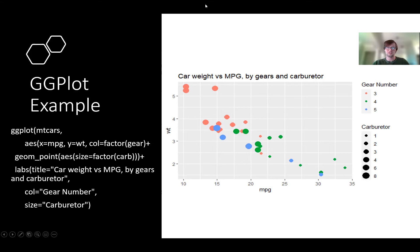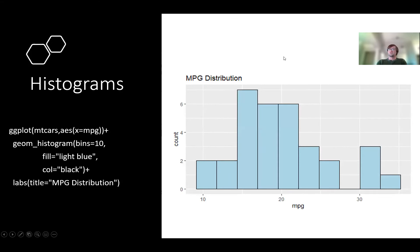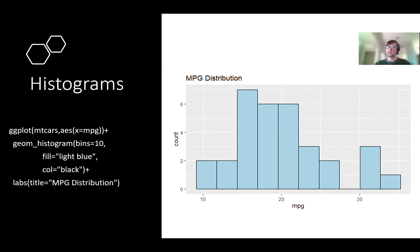Next — it's pretty handy to make histograms and ggplot makes them really fast and really easy. For this specific example, I'm just looking at the distribution of miles per gallon. Before we used geom_point, but this time we're using geom_histogram. Most of these different visualization types are just geom_underscore and then what you want. Within the geom_histogram, you have calls that are pretty similar to geom_point but not totally the same.